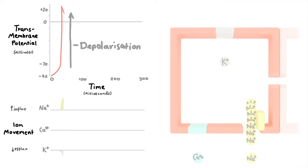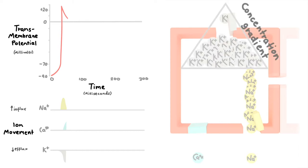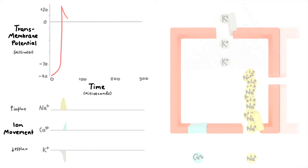This rapid change to positive TMP activates our next phase, opening of voltage-gated potassium channels. These open and potassium moves out of the cell down its concentration gradient in an initial burst. This burst is seen as a downward notch in the action potential.